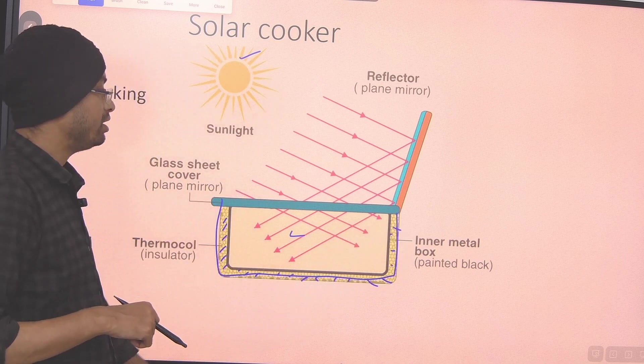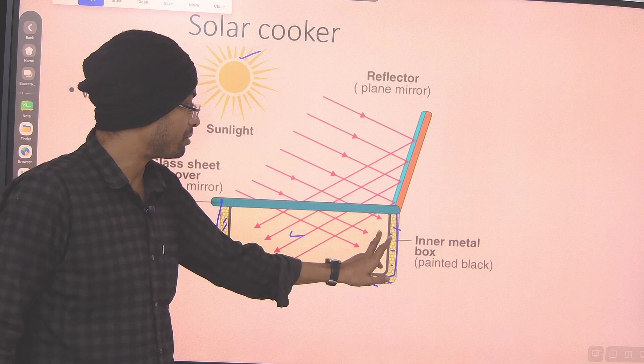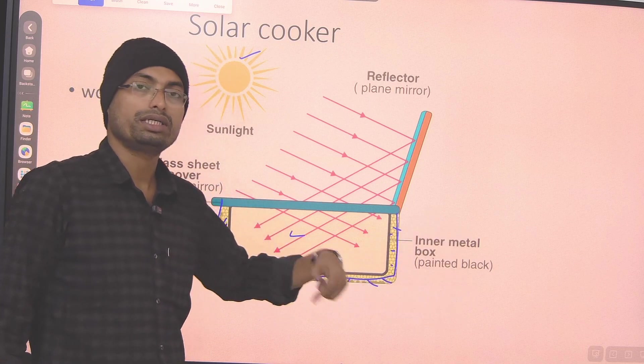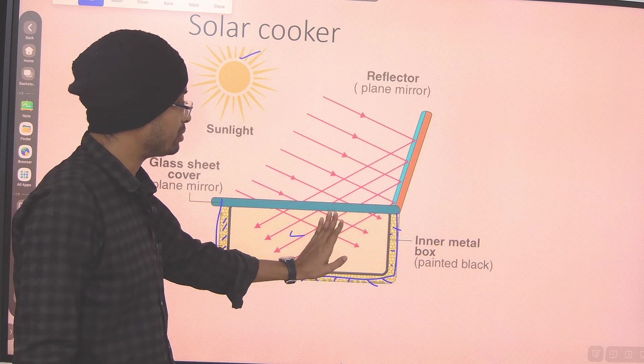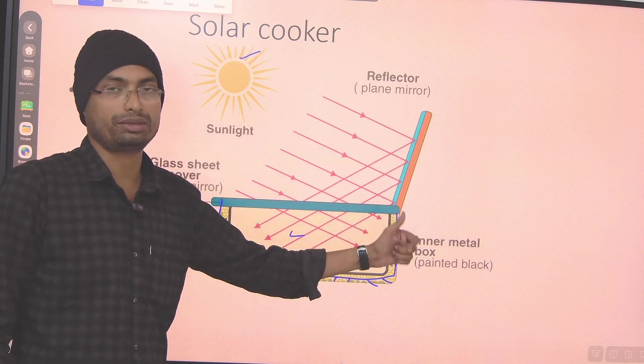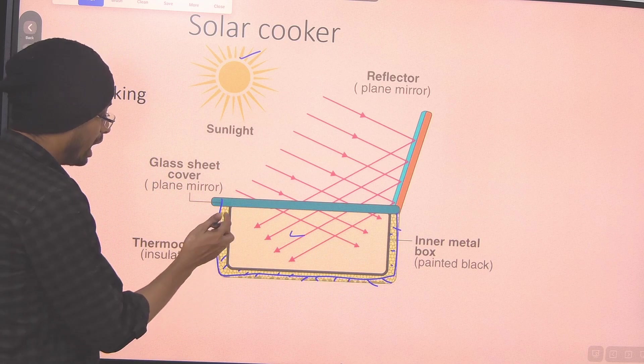What do we do? This solar box is insulated on the outside. It means it will prevent heat loss. So, the heat from the inside will not escape to the outside.